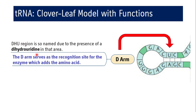The D-arm is named because it contains the modified nucleotide base dihydrouridine in this region. The D-arm serves as the recognition site for the enzyme that adds the amino acid — peptidyl transferase — which is present in the ribosome. This enzyme must identify a particular tRNA, so the D-arm provides the identification point for the tRNA to attach to peptidyl transferase at the same time it binds to mRNA.